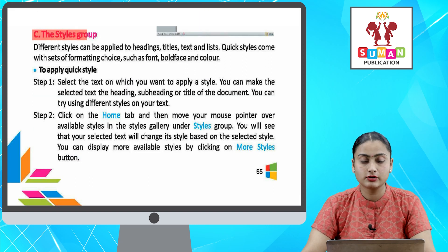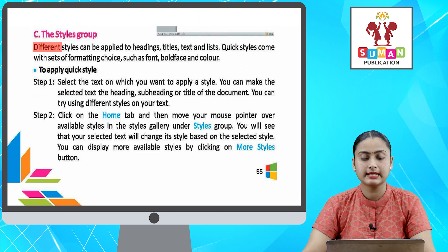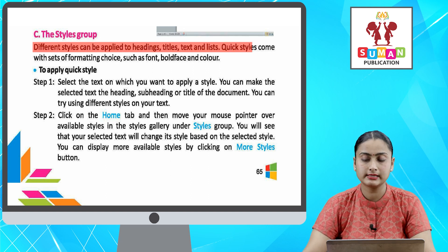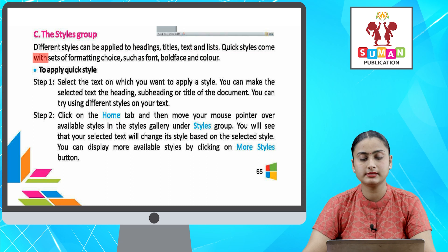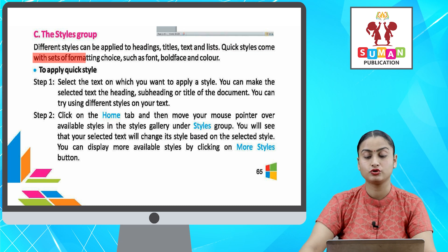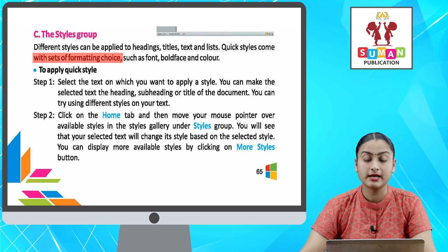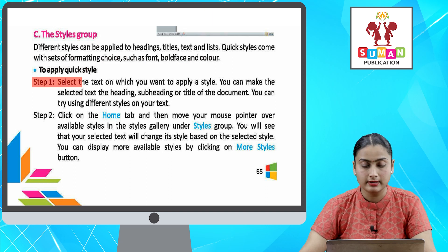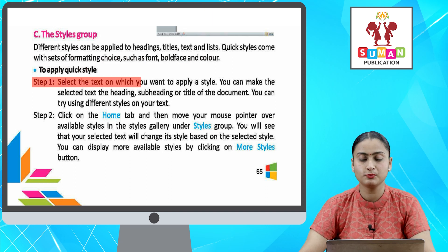The Styles group. Different styles can be applied to headings, titles, texts, and lists. Quick styles come with sets of formatting choices such as font, bold face, and color. To apply a quick style, step one: select the text on which you want to apply a style.